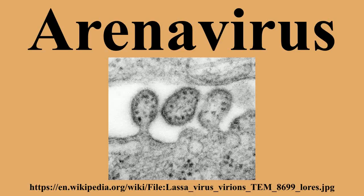Aseptic meningitis, a severe human disease that causes inflammation covering the brain and spinal cord, can arise from lymphocytic chorio-meningitis virus infection. Hemorrhagic fever syndromes are derived from infections such as Llanarito virus, Junin virus, Lassa virus, Luyo virus, Macupo virus, Sabia virus, or Whitewater Arroyo virus. Arenaviruses are divided into two groups.